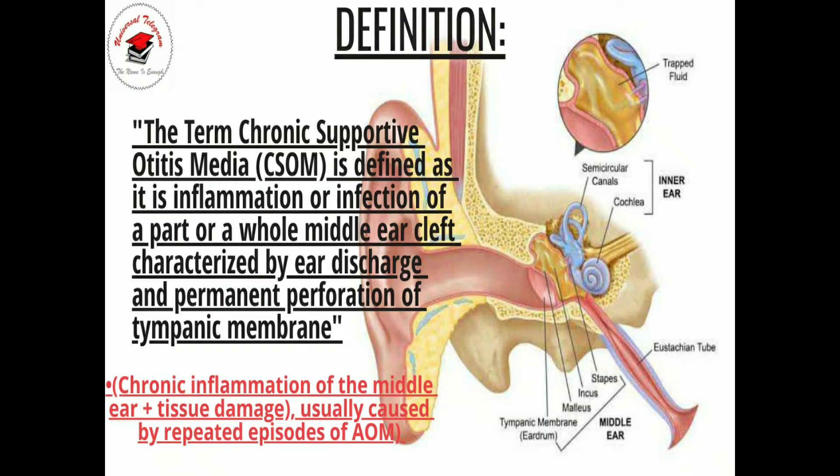In otitis media, the Eustachian tube becomes narrow and inflamed, so the pressure gets too high in the middle ear cavity. This leads to tissue damage plus a permanent perforation of the tympanic membrane, as it is a delicate structure. This results in chronic inflammation of the middle ear plus tissue damage.